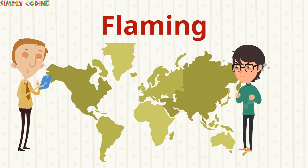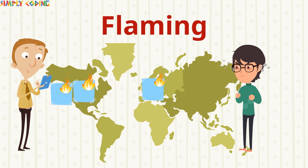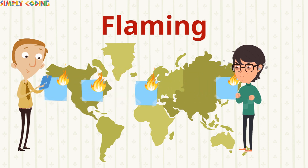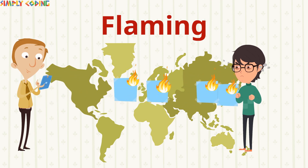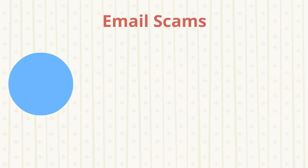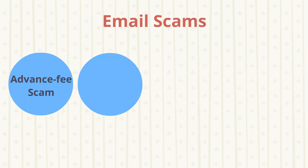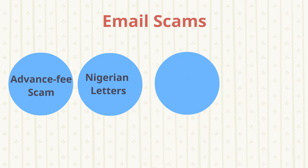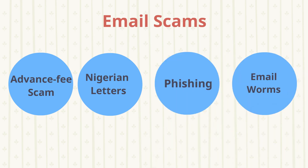Flaming occurs when a person sends a message or many messages with angry or antagonistic content. There are various types of email scams, including advance fee scams, Nigerian letters, phishing, email worms, and more.